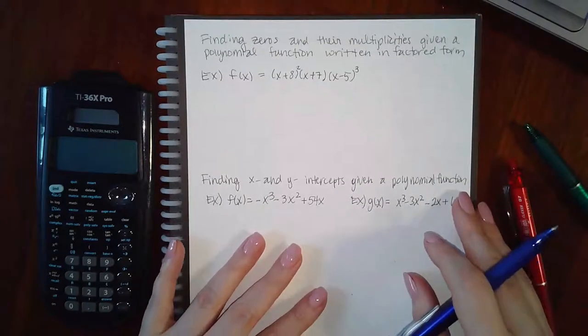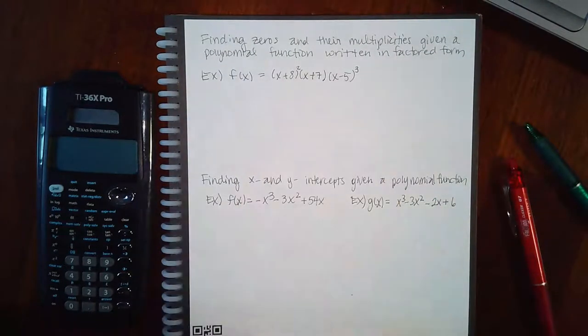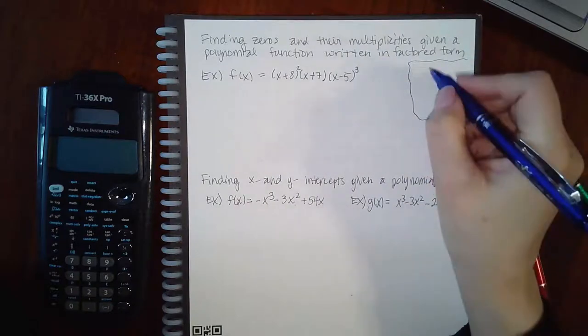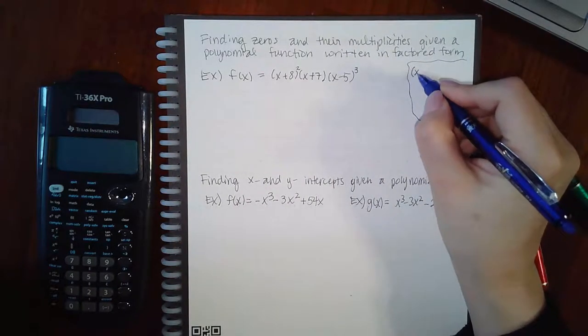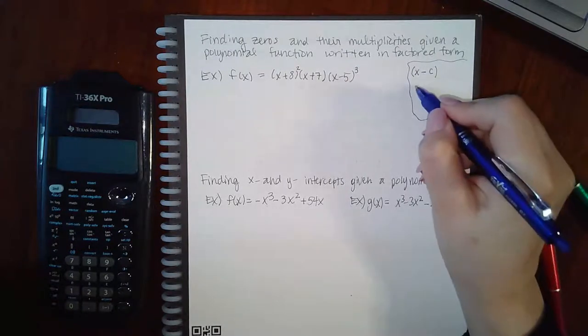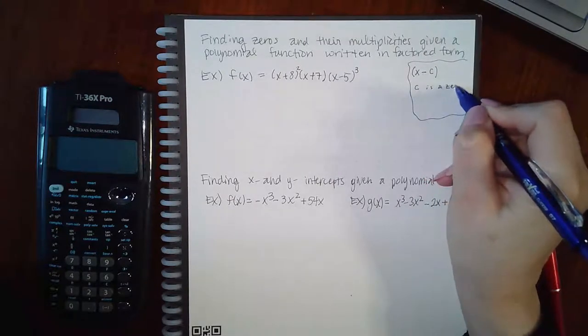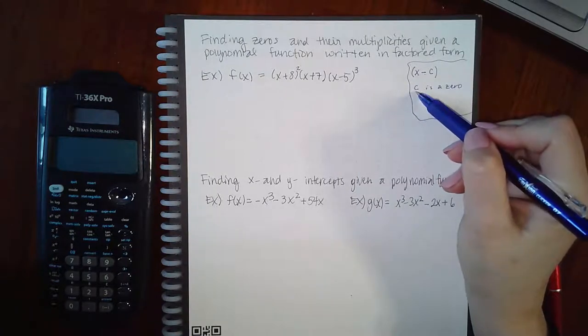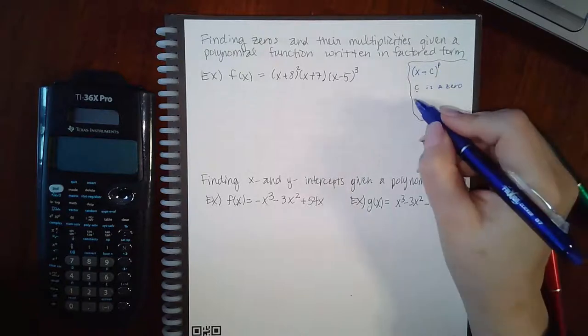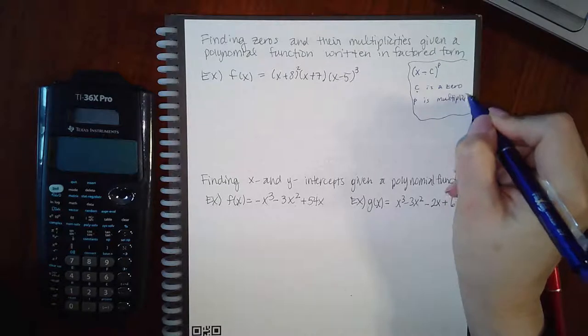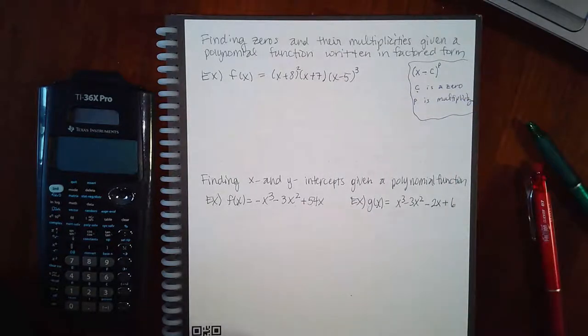Now let's look at another topic. This one says finding zeros and their multiplicities given the polynomial function written in factored form. We need to know a couple of bits of information. The first thing is that if you have a factor written like this, c is a zero. Therefore you have to take the opposite sign from what's inside the parentheses to figure out what the actual zero is. The second thing is that your power up there is the multiplicity.